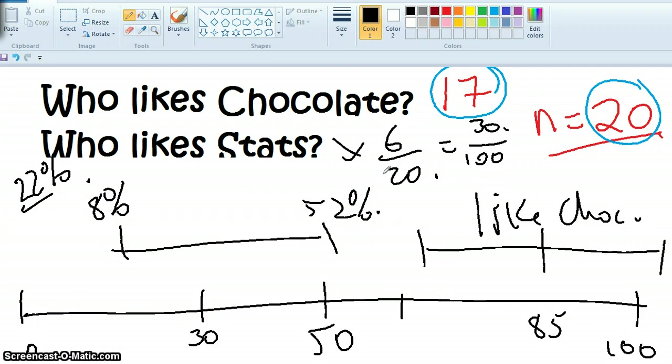So what I've got here is there's no crossover. Here I've got a gap in the middle. So I can confidently state, 95 percent confidence, that there is definitely a difference back in all year 13s that more people do like chocolate than like stats. Does that make sense?